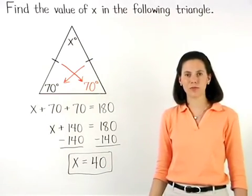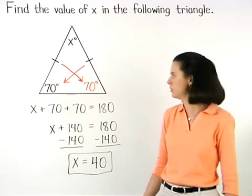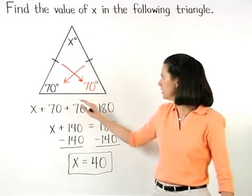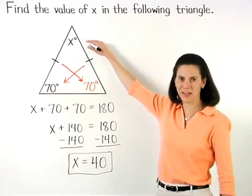So the angles of this isosceles triangle measure 70, 70, and 40 degrees.